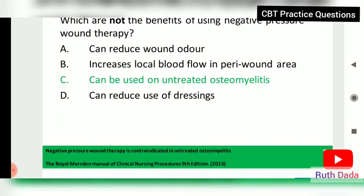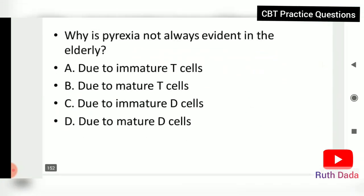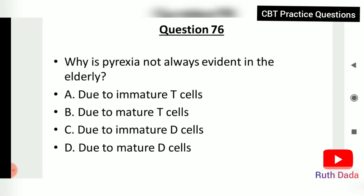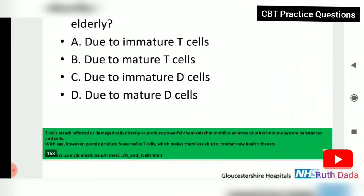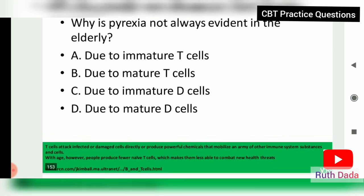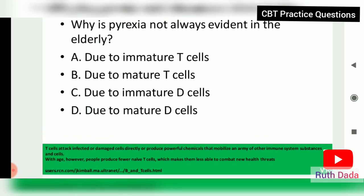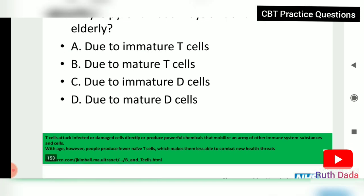Question 76: Why is pyrexia not always evident in the elderly? As people age, they produce fewer T-cells, which makes them less able to combat new health threats. T-cells attack infected or damaged cells, but with age, fewer are produced, reducing the ability to mount a proper immune response.